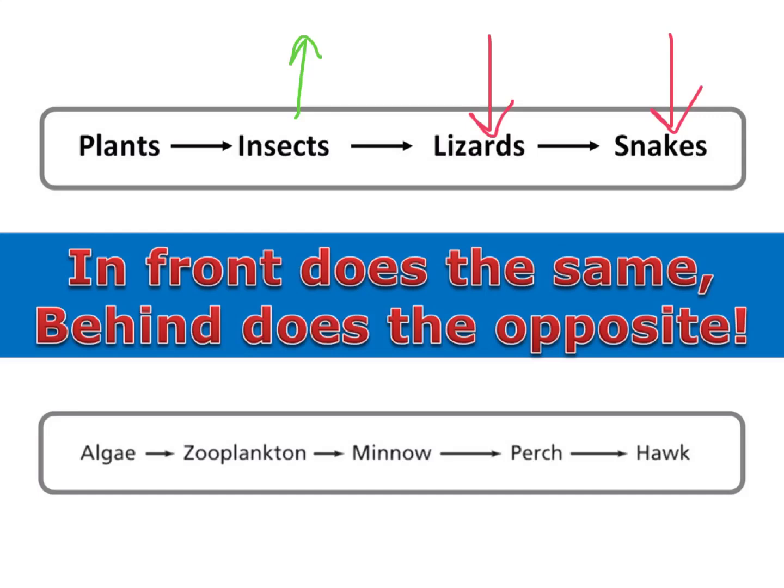You may be wondering about the plants, and we can still use this phrase to figure it out. It's not that everything behind the lizards does exactly the same thing — you have to do this one at a time. Since the plants are behind the insects, they would do the opposite and decline. If there are more insects eating plants, more plants will be eaten and that population will go down.